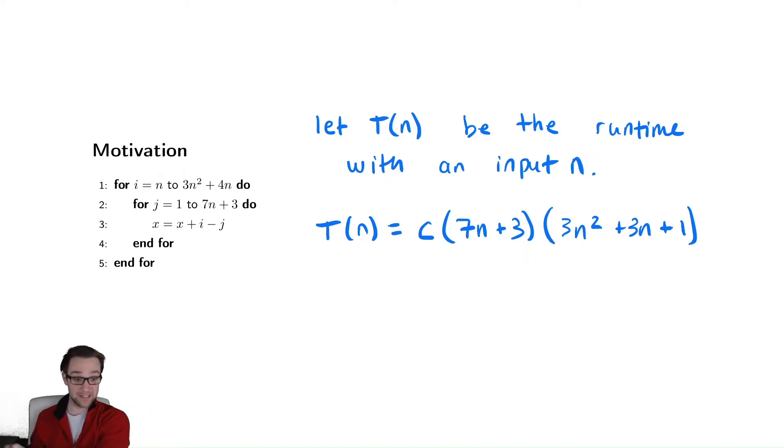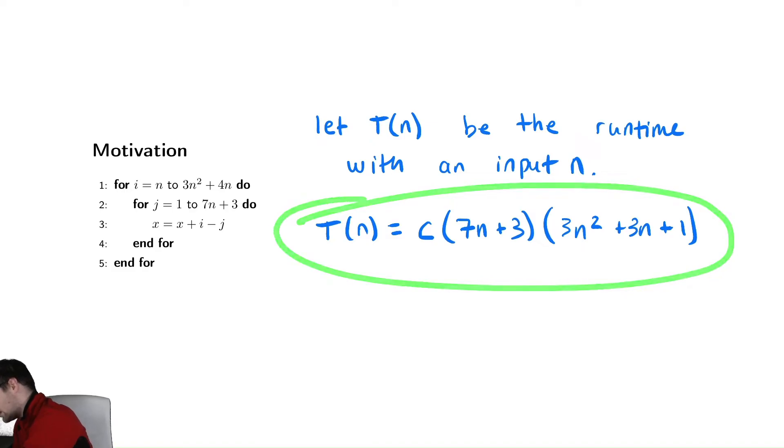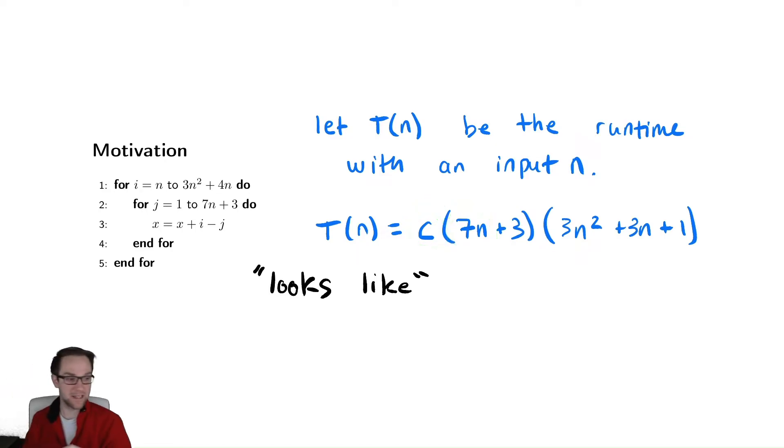We're going to try to develop something similar here as well. So our goal is going to be able to identify what does this thing look like. So it looks like we have a constant times 7n is definitely the biggest thing in that first set of parentheses, and 3n squared is definitely the biggest thing in that second set of parentheses.